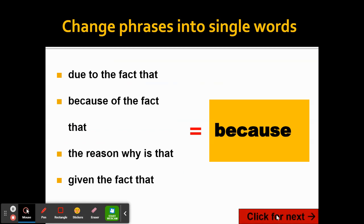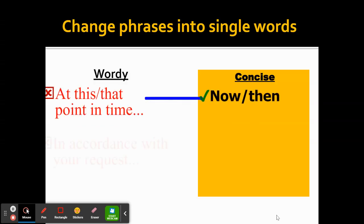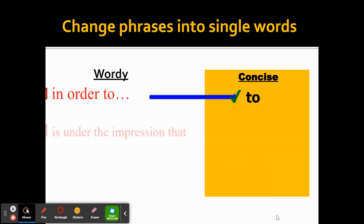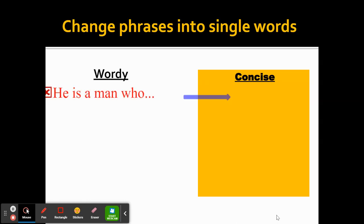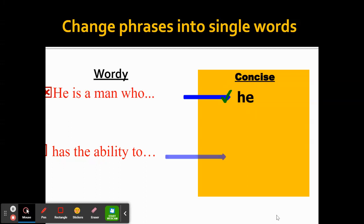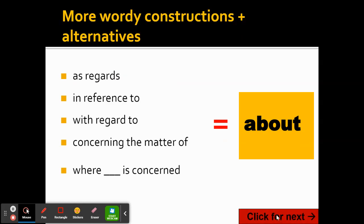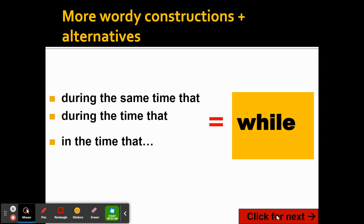Many of the phrases you use can be replaced with just one word. Many of you write things like 'given the fact that' — all you need is 'because.' 'In light of the fact that' — what you really mean is 'since.' Whenever you have a phrase like this, you ought to be able to go back and turn it into one word. 'In the time that' — you just need to say 'while.'